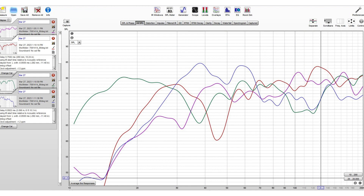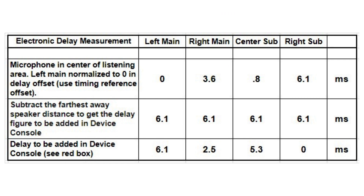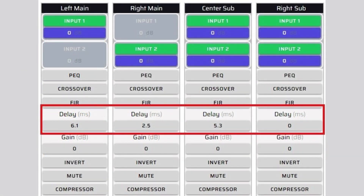Once you have completed the delay measurements of the remaining speakers and subwoofers, the resulting REW display will have all of the delays listed on the left. Transfer them from the REW page into a spreadsheet. You can then determine which speaker or subwoofer is the farthest away, both physically and electronically, by identifying the largest delay value, which is the right subwoofer in our example. In your spreadsheet, subtract the largest delay value — 6.1 ms in our example — from all of the other delay measurements. The resulting delay figures will be added as positive numbers in the device console delay settings row, highlighted in red.